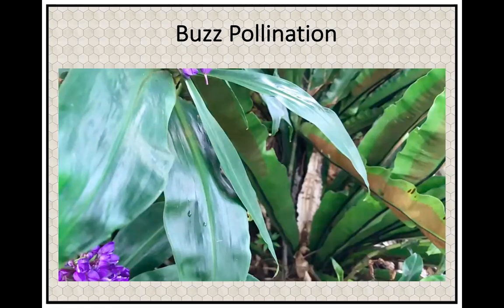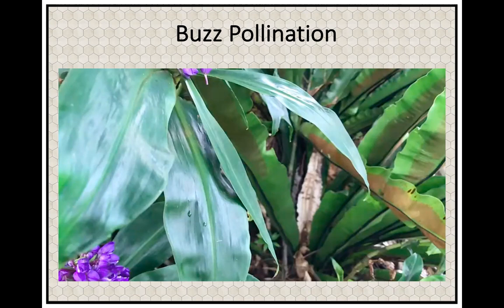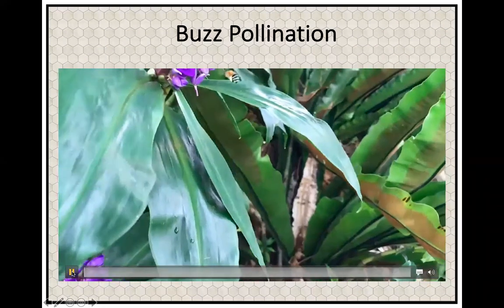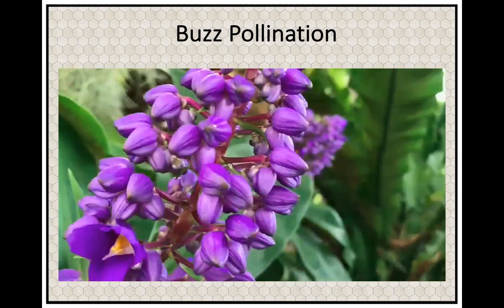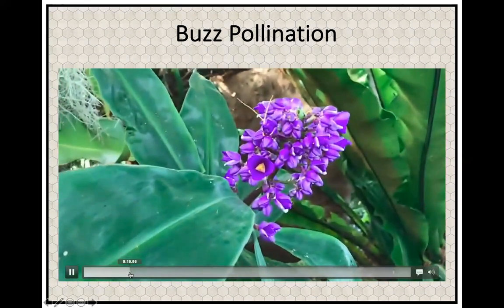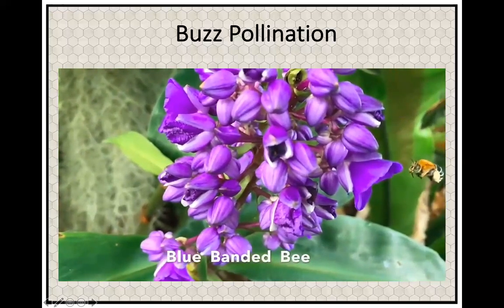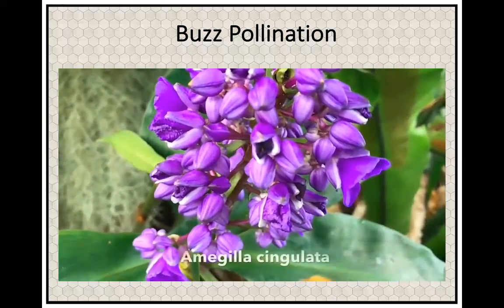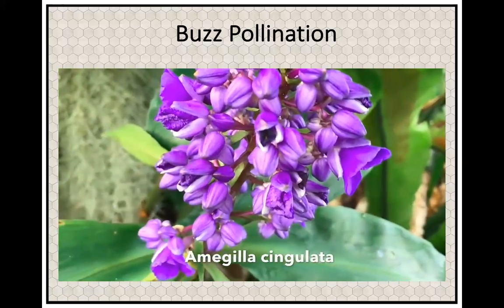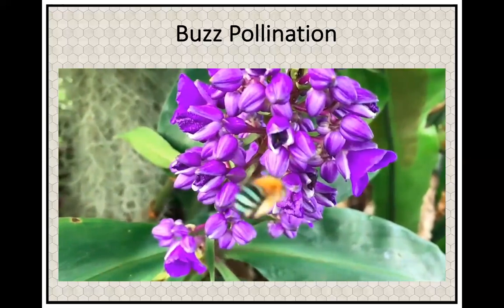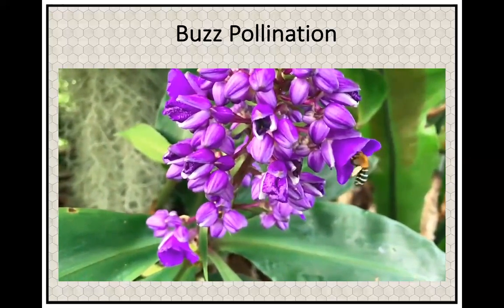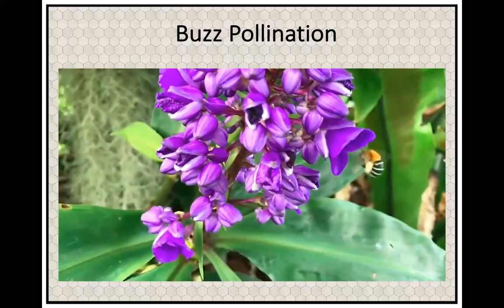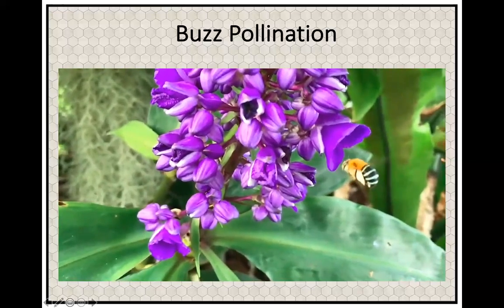Here we go — this is a blue-banded bee. Watch its wings. They've slow-motioned it down so you can see how it shakes itself. Amegilla is the scientific name for this bee, and not all of them have blue bands. They're quite furry at the front end and have those stripes at the back. See how it shakes itself — it's almost like a jackhammer. Absolutely amazing.